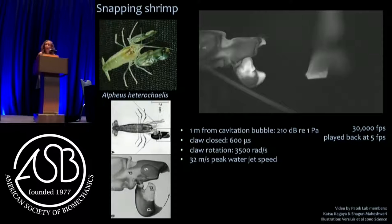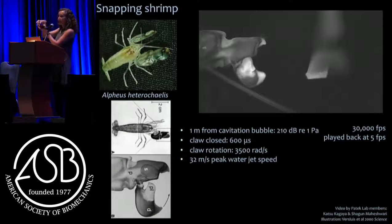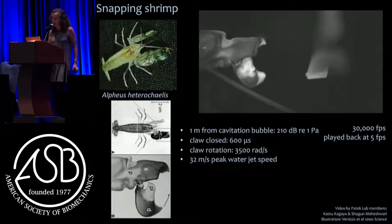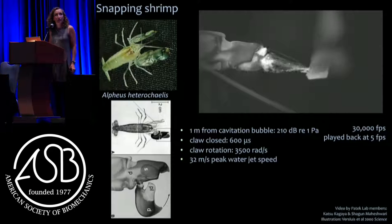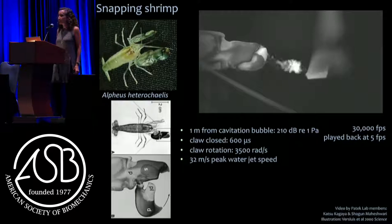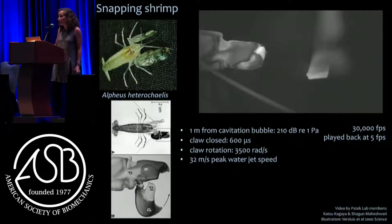Another example is snapping shrimp. Snapping shrimp store energy through a slow muscle contraction trying to close their claw. Two adhesive patches serve as the latch — when they break apart, the claw slams closed. It generates such a fast jet of water that the water vaporizes behind it in a cavitation bubble, and when these bubbles collapse it sets off a huge implosion that knocks out their prey. They also fight with it.